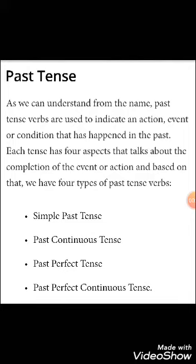What is past tense? As we can understand from the name, past tense verbs are used to indicate an action, event or condition that has happened in the past. Each tense has four aspects that talk about the completion of the event or action, and based on that we have four types of past tense.